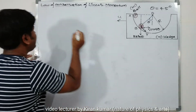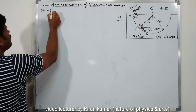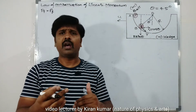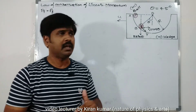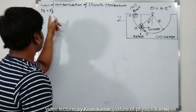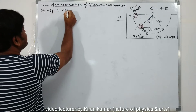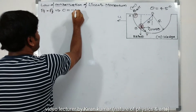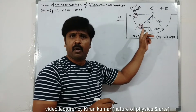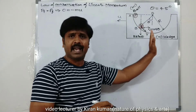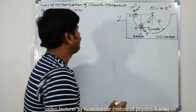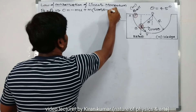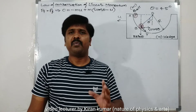According to conservation of linear momentum, initial momentum equals final momentum. Initially the system is at rest, so initial momentum is zero. After release, the wedge moves in the negative x-direction, so its momentum is −m·u. The ball moves along the positive x-axis with horizontal component (v cos θ − u), taking relative velocity into account, giving: 0 = −m·u + m·(v cos θ − u).